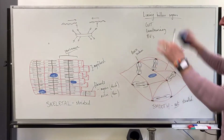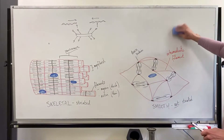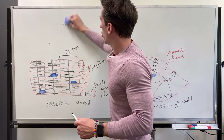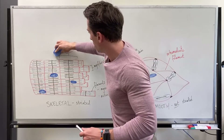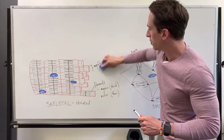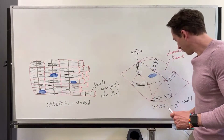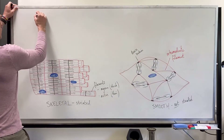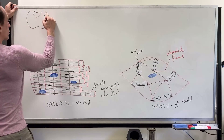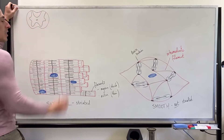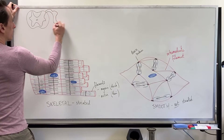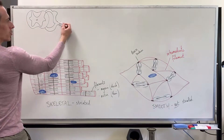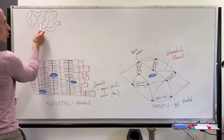Now let's talk about innervation. For skeletal muscle — it's conscious, it's attached to bones — it's going to be motor neurons. There are two motor neurons that go from the cortex down to the skeletal muscle. Looking at the spinal cord, the cell body for the lower motor neuron sits in the ventral gray horn and leaves through the ventral nerve root, while sensory input goes through the dorsal nerve root.